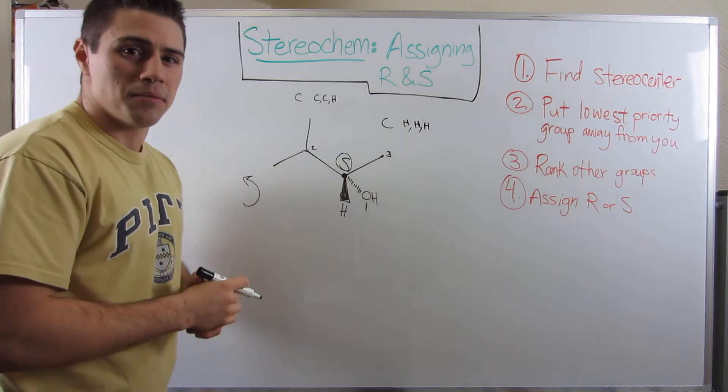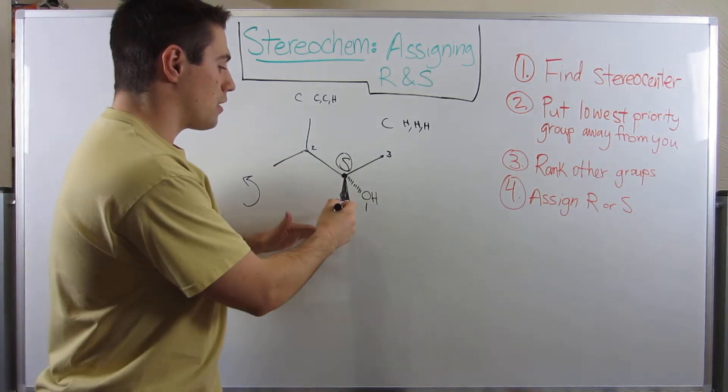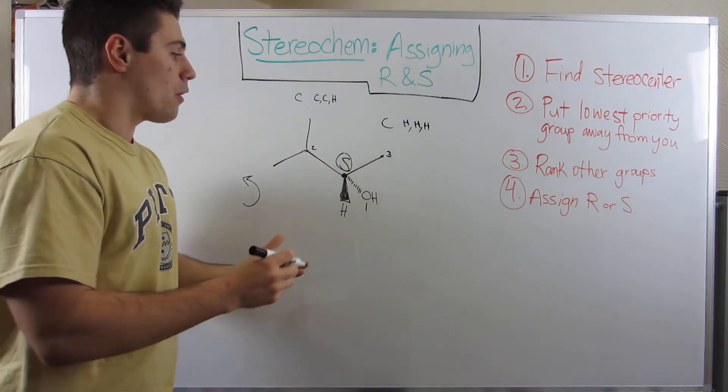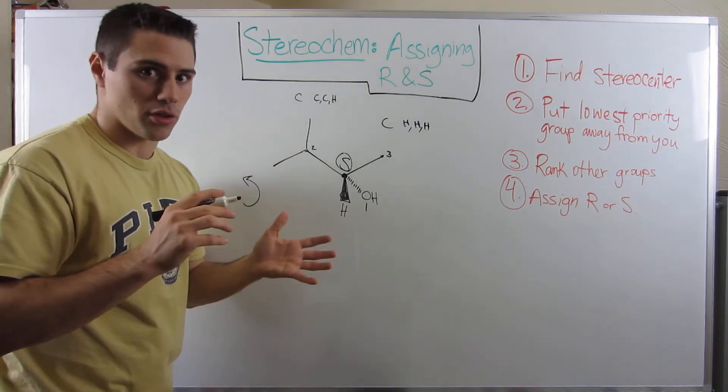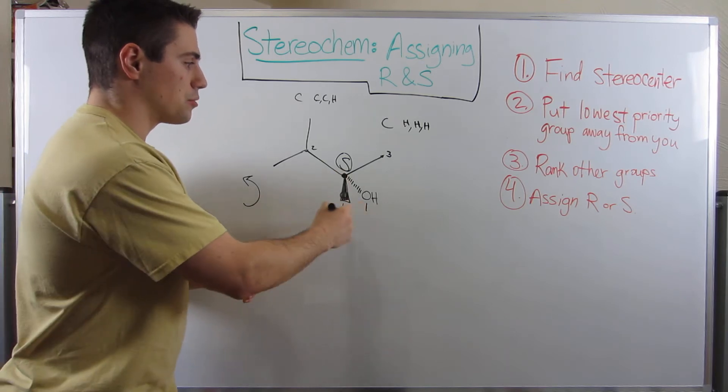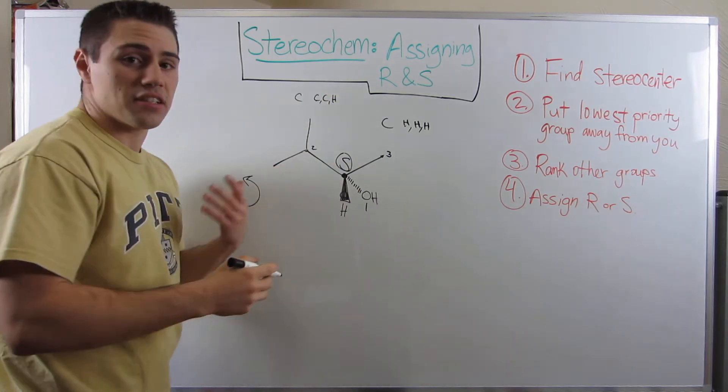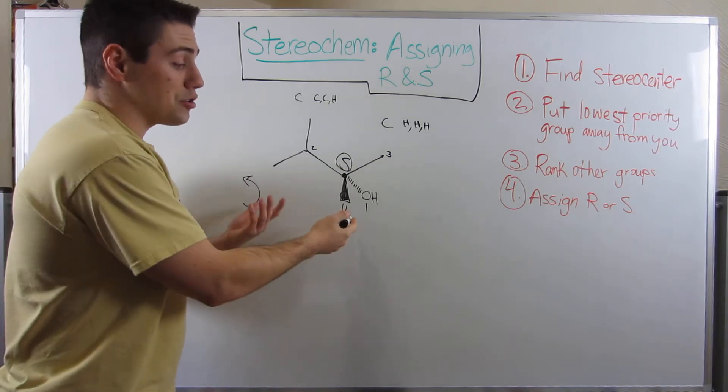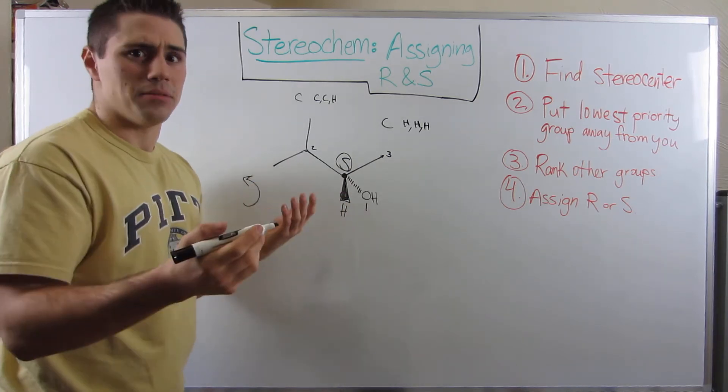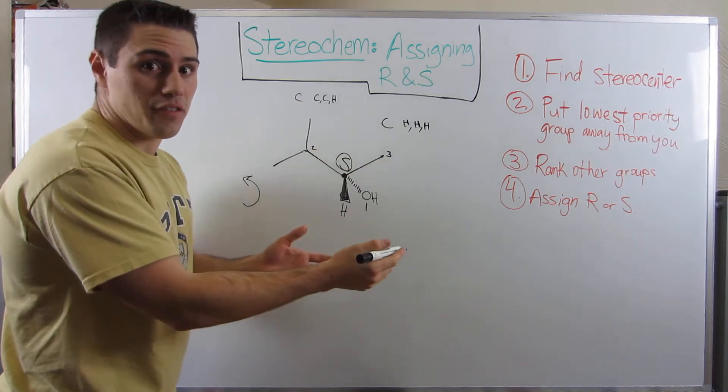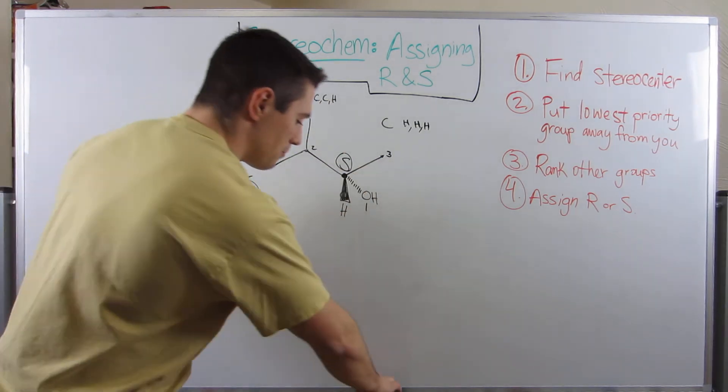See how that works? So it's really nice when hydrogen's either facing away from you or towards you because if it's facing away from you, or whatever your lowest priority group is, you just number your groups, go clockwise or counterclockwise, and then assign R or S. Also, if it's facing towards you, easy money. All you got to do is look to see what it would be and then just kind of flip and take the opposite.